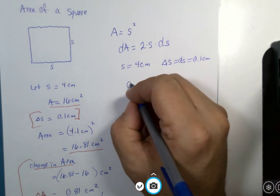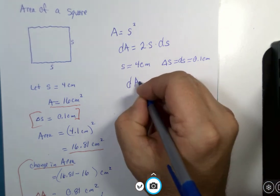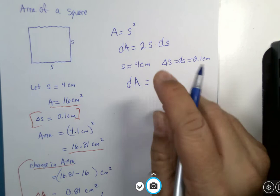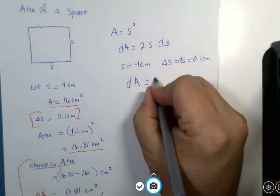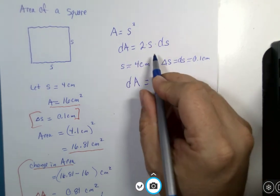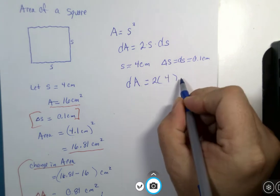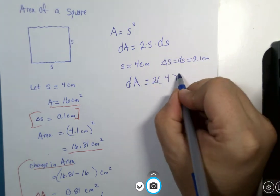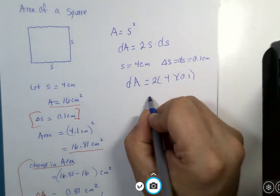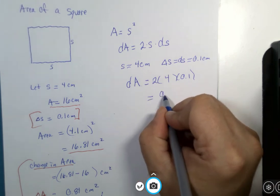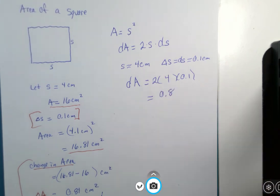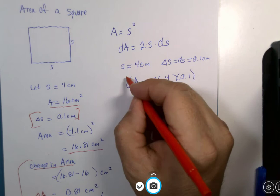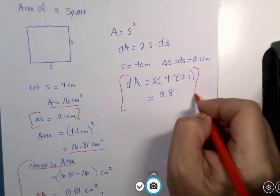So, I can now calculate dA. dA is 2 multiplied by 4 multiplied by dS, 0.1, and that is 0.8. Now, let me tell you what this means.